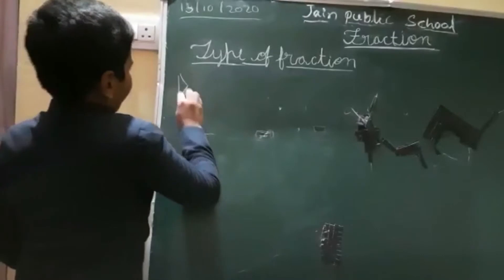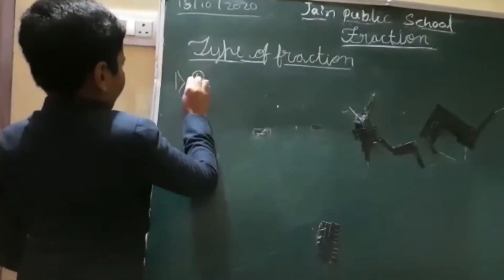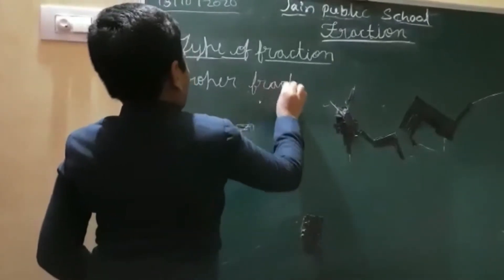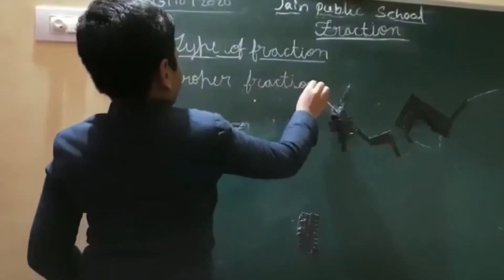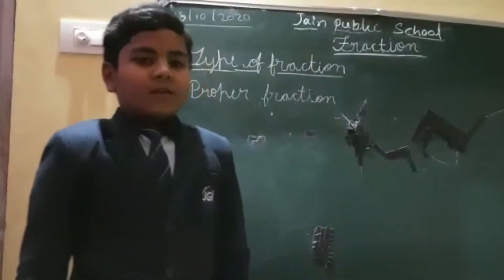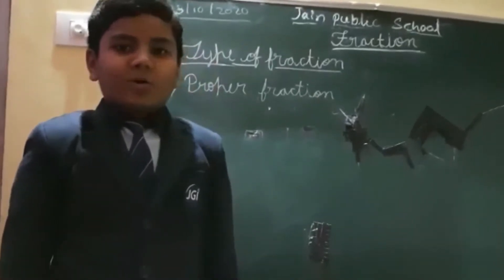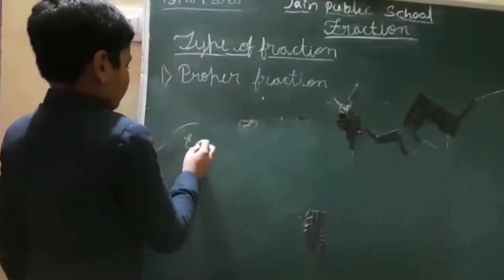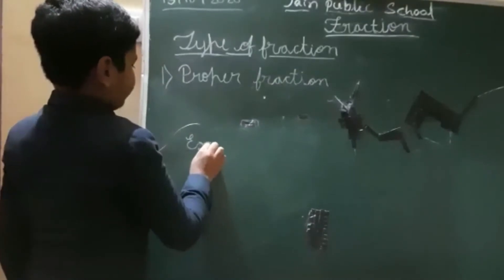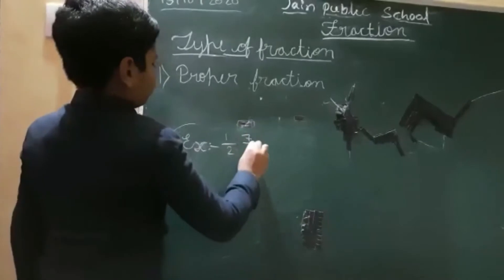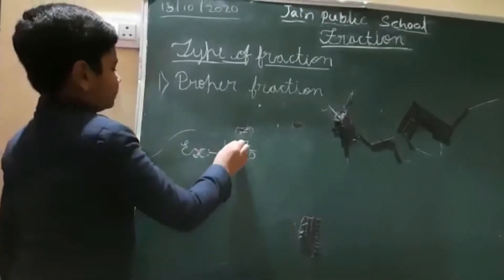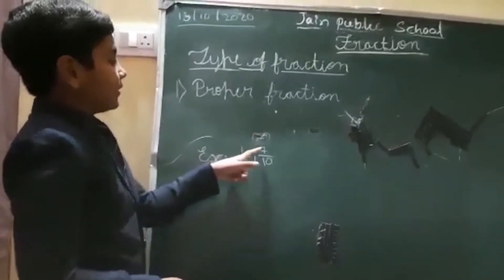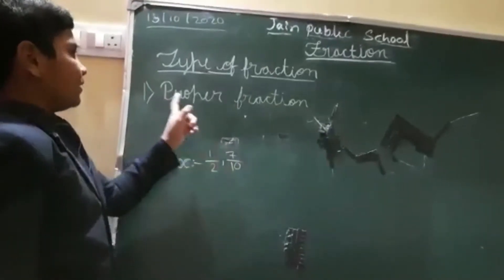First one is proper fraction. Proper fraction means the fraction in which the numerator is smaller than the denominator is called a proper fraction. For example, 1 by 2 and 7 by 10. Here, the numerator is smaller than the denominator — 7 is smaller than 10. So it is called a proper fraction.